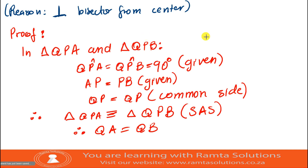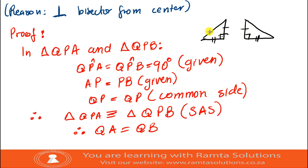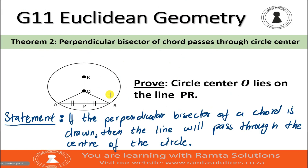If these sides are equal and these sides are equal, then QA must also equal QB. By proving the triangles congruent, we therefore conclude that side QA is also equal to QB.